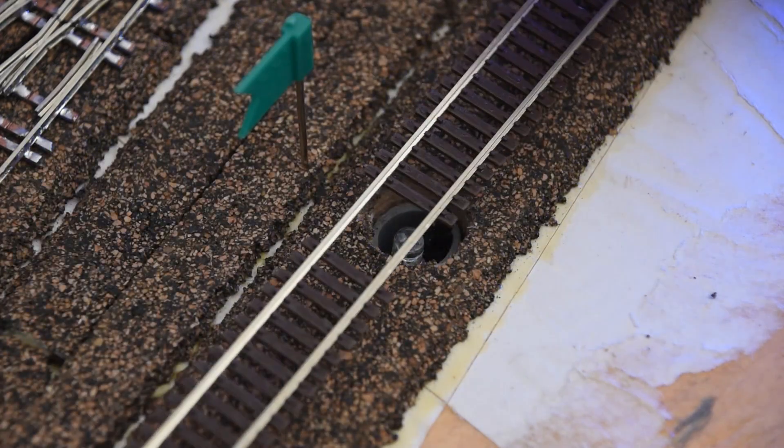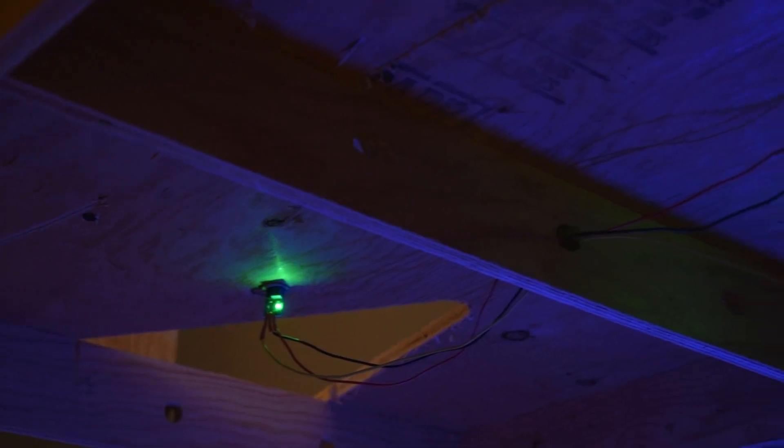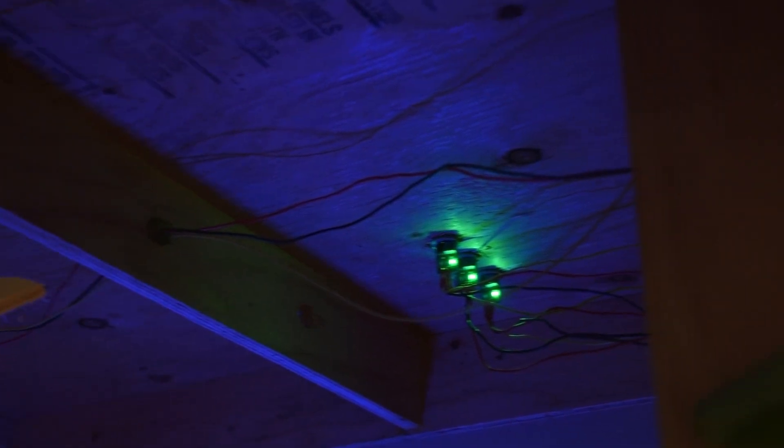I installed 10 IR detectors over four staging tracks, which required two Arduino controllers. I temporarily attached the indicator LEDs to the frame, and after some troubleshooting, everything worked as expected.